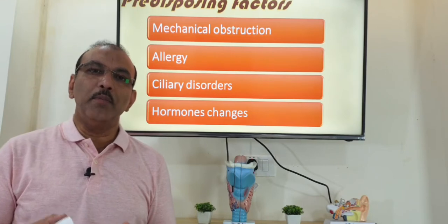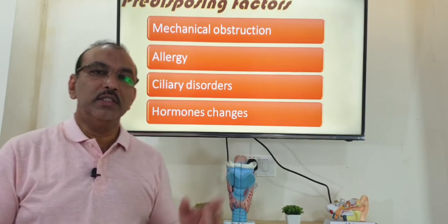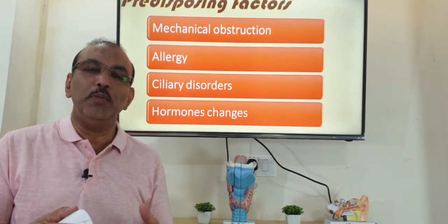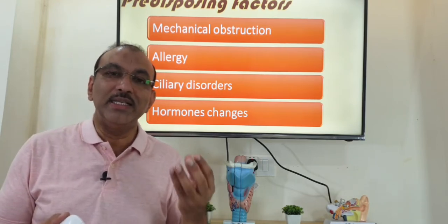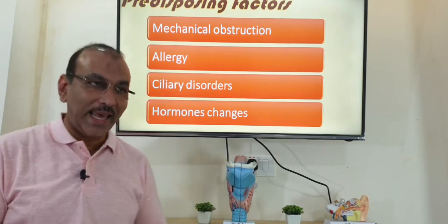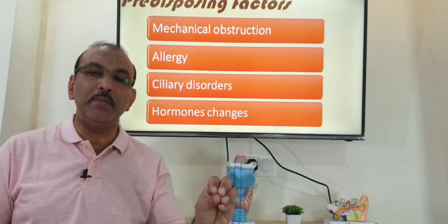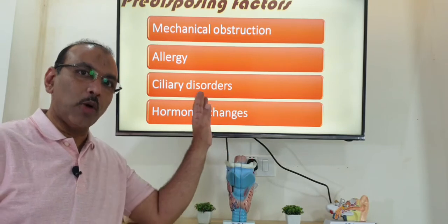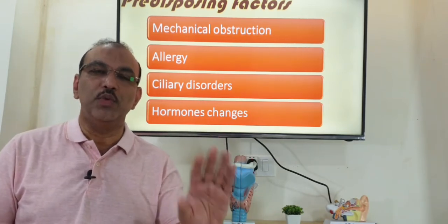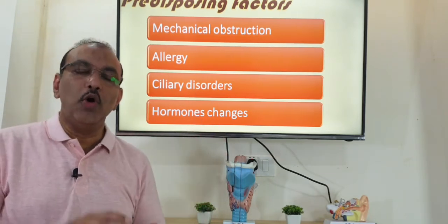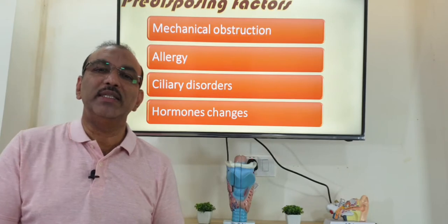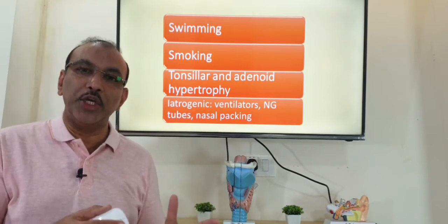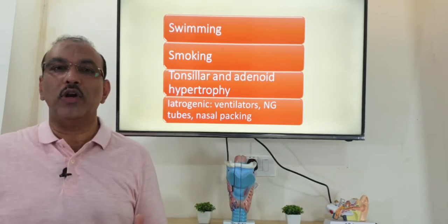Some persons are more prone for sinusitis. If the patient has got mechanical obstruction in the nose — a deviated nasal septum, turbinates not proper — these patients don't get proper airflow reaching the sinus and are more prone for sinusitis. Likewise, if they have allergy — just like how diabetic patients are more prone for infection — in ENT, if they have allergy, the chances of getting infection are very high. Hormonal changes or dysfunctional nasal cilia also increase the chance, and these patients get more recurrent sinusitis, progressing from acute to chronic sinusitis.